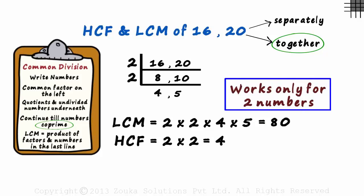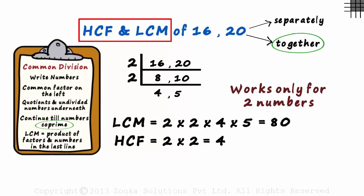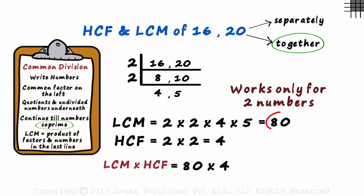There is another interesting concept about the HCF and the LCM of two numbers. First, let's find the product of the LCM and the HCF. LCM is eighty and the HCF is four. The product will be eighty times four which equals three hundred and twenty.